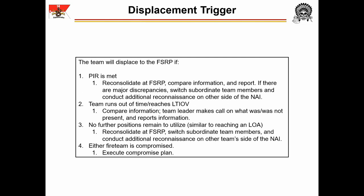If the team has met the PIR, the team leader and ATL compare what they saw. If there are no major discrepancies, the team reports the information and displaces. If there are major discrepancies — for example, the team leader saw an armored fighting vehicle the ATL did not — the team leader can swap the two SOs in his team for the ARTO and SAW gunner. The two teams then reconnoiter the opposite side of the objective, with subordinate team members switched since they already know the routes to the best observation positions. The reconnaissance continues until one of the four triggers is met. If instead the team ran out of time or reached LTIOV, they compare information, the team leader makes a call, and the team reports. If all positions were exhausted, teams can switch members and reconnoiter the other side until out of time, PIR is met, or compromised.